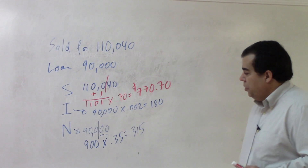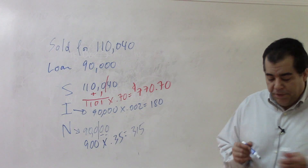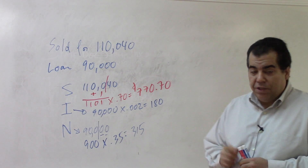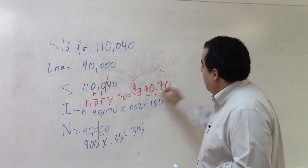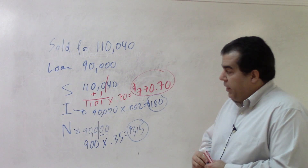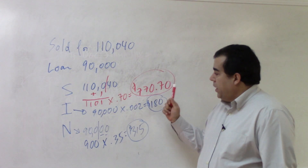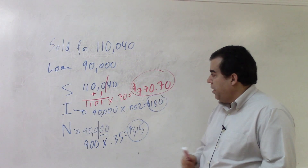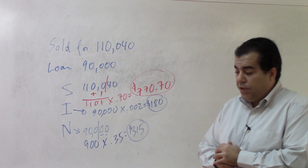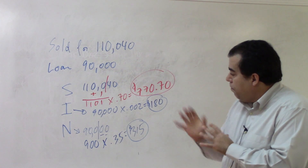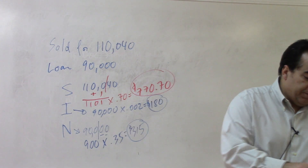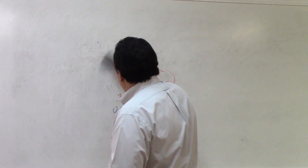With math problems on the state exam, be very careful: they will sometimes give you more information than you need. If the question asks for the total taxes due, you add $770.70 plus $180 plus $315. But if the question asks only for the tax on the deed, the answer is just $770.70. Don't go on autopilot — incorrect answer choices will sometimes match numbers you'd get by calculating the wrong thing. Always identify clearly what the question is asking. I hope that memory aid helps you on your state exam.